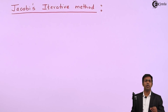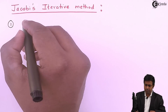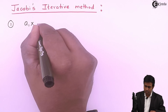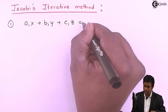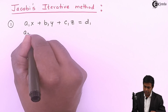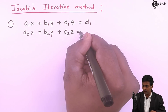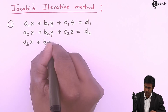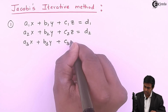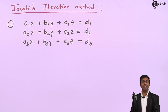To understand Jacobi's iterative method, let's consider some equations. Let a1x + b1y + c1z = d1, a2x + b2y + c2z = d2, and a3x + b3y + c3z = d3 be three simultaneous linear equations.